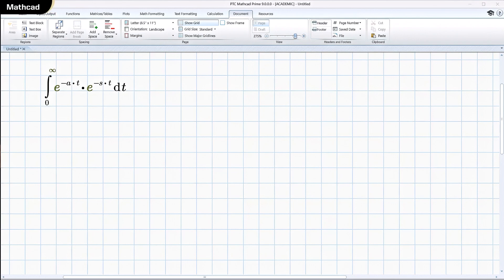So if you look on the screen here, I've typed in the definition of a Laplace transform. There's the kernel function right there. And there's the function I'm trying to transform. That's f of t.